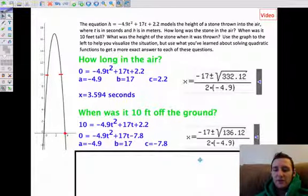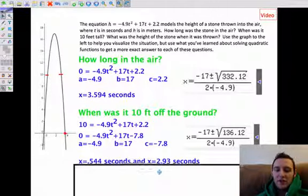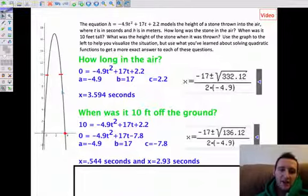So I plug those into the quadratic formula and it gives me two answers. It gives me 0.544 seconds and X equals 2.93 seconds, so about 3 seconds. So to answer the question, when is the stone 10 feet off the ground? It's 10 feet off the ground after about a half a second and about 3 seconds.